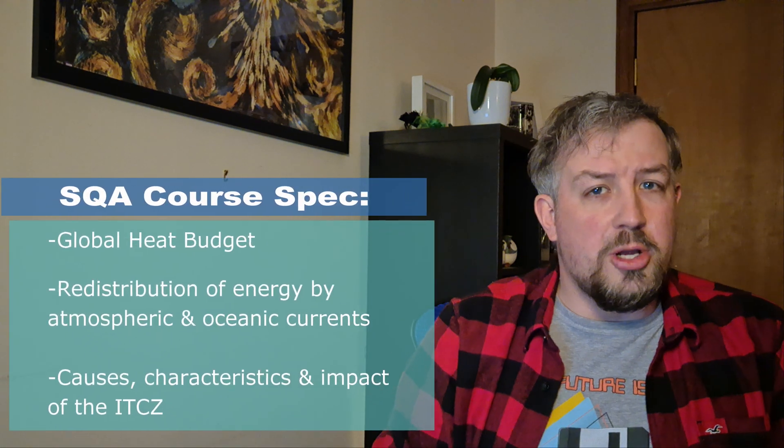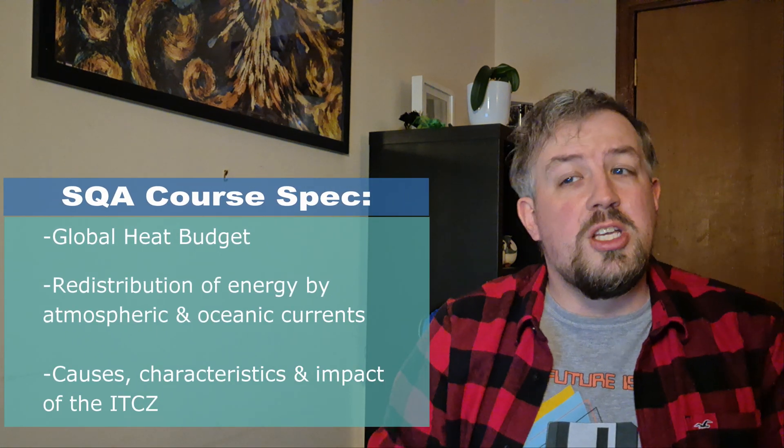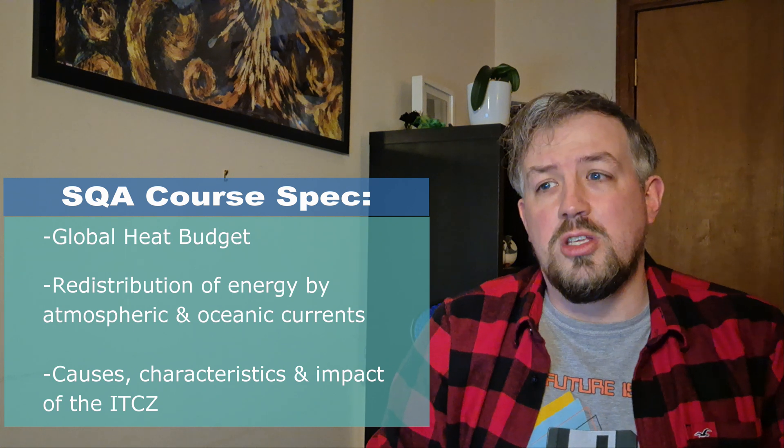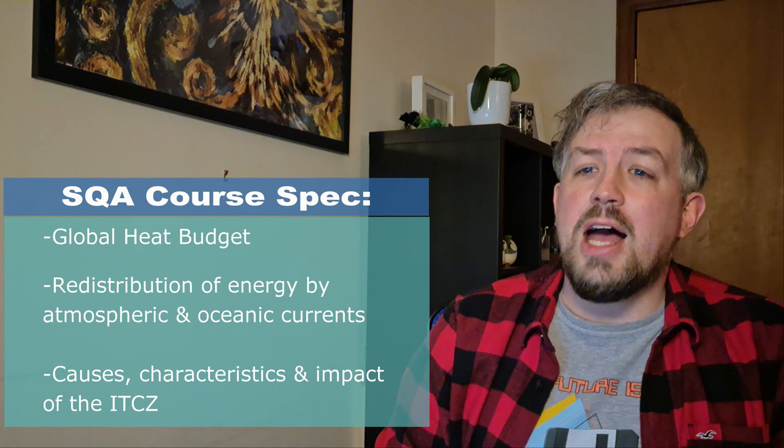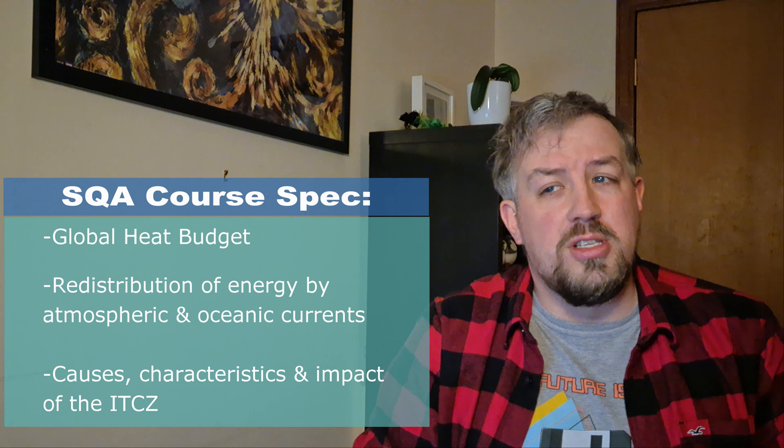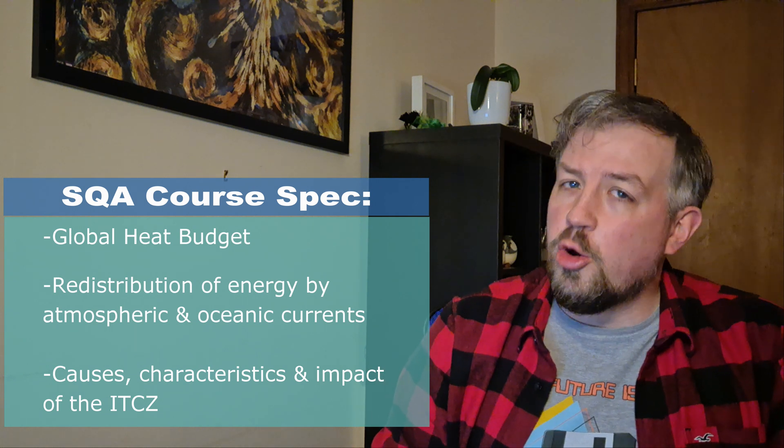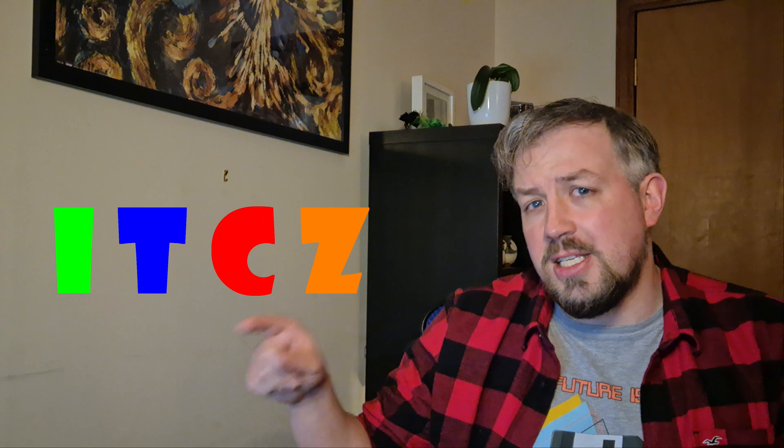Welcome Higher Geographers to the next topic in our geography course: atmosphere. Some think this is the most difficult of the higher courses, but personally I think if you can get your head around it, it's one of the best and most straightforward courses to do. First up, what the SQA says you need to know: the global heat budget, the redistribution of energy by atmospheric and oceanic circulation, and the causes, characteristics, and impact of the Intertropical Convergence Zone — pretty much hereafter called ITCZ.